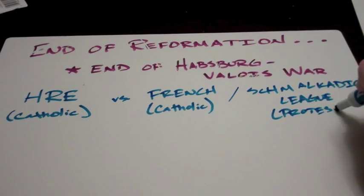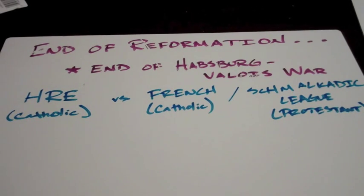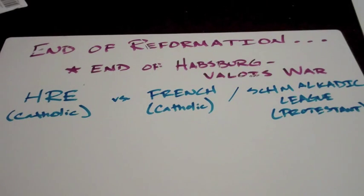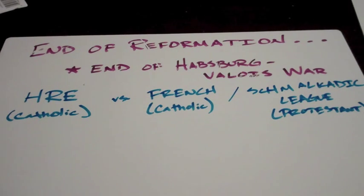This was really a war of politics. The Schmalkaldics were not only wanting religious freedom within the Holy Roman Empire, they were also wanting political freedom. And so the French, who were worried about being surrounded by Habsburgs, joined forces with the Protestant princes of Germany to fight off the Holy Roman Empire.